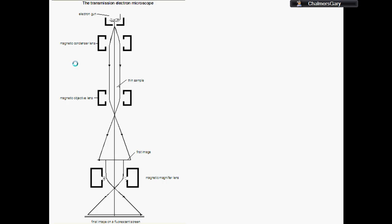This is a transmission electron microscope. The electrons are produced at the top here by an electron gun. The magnetic condenser lens then creates a collimated beam which goes through a thin sample. It's so thin here you can't actually see it. And then the next magnetic objective lens then focuses the image from the object onto a first image.